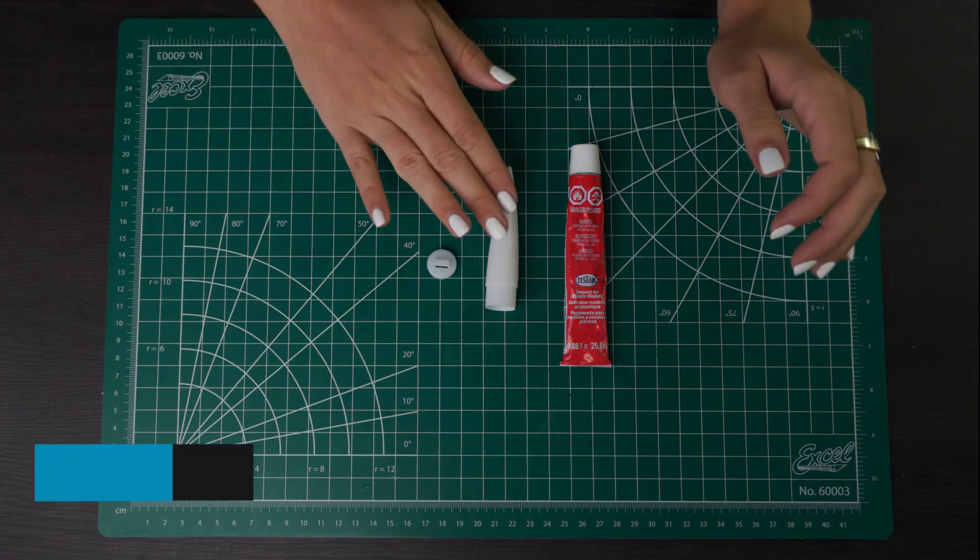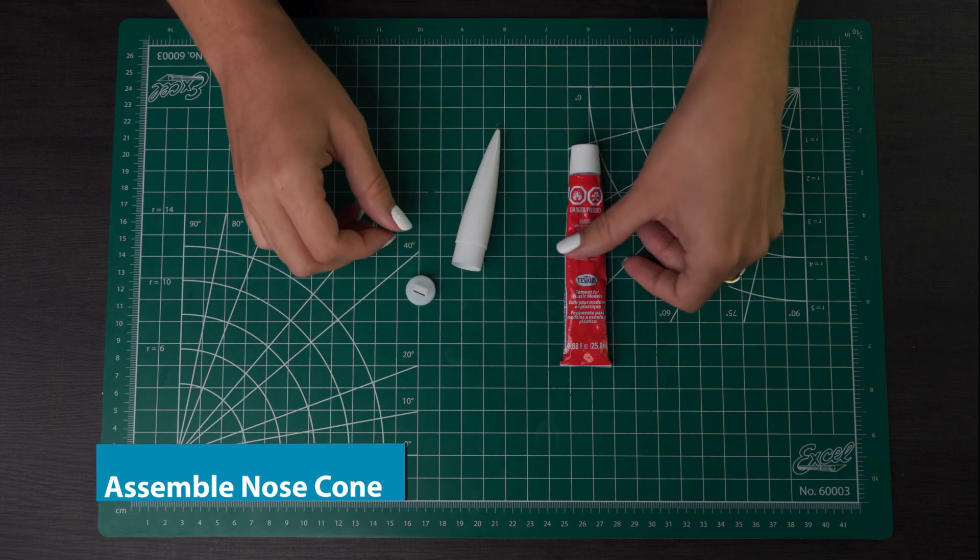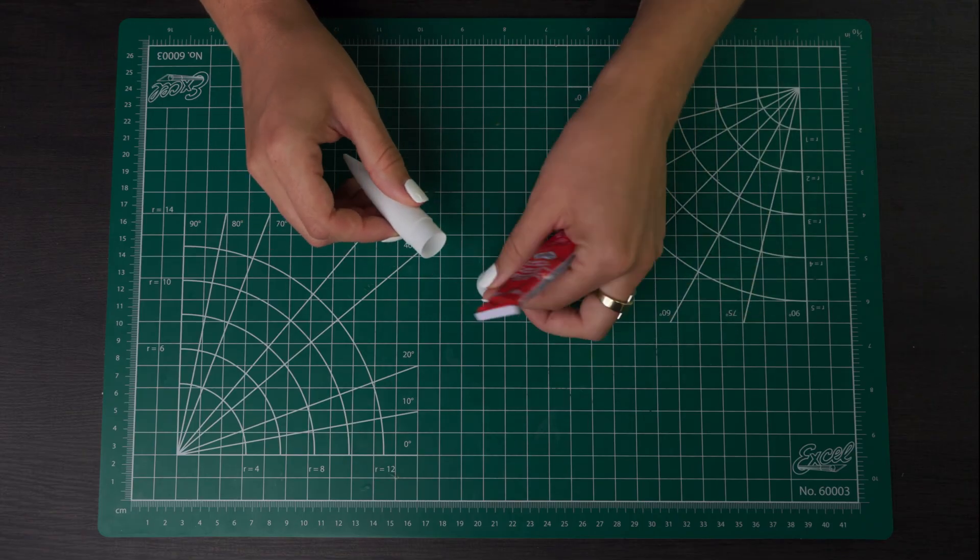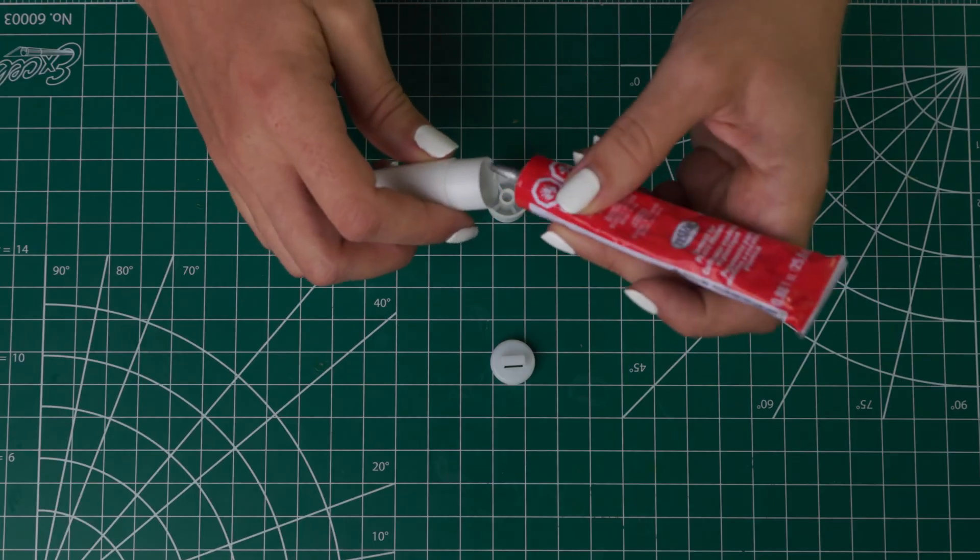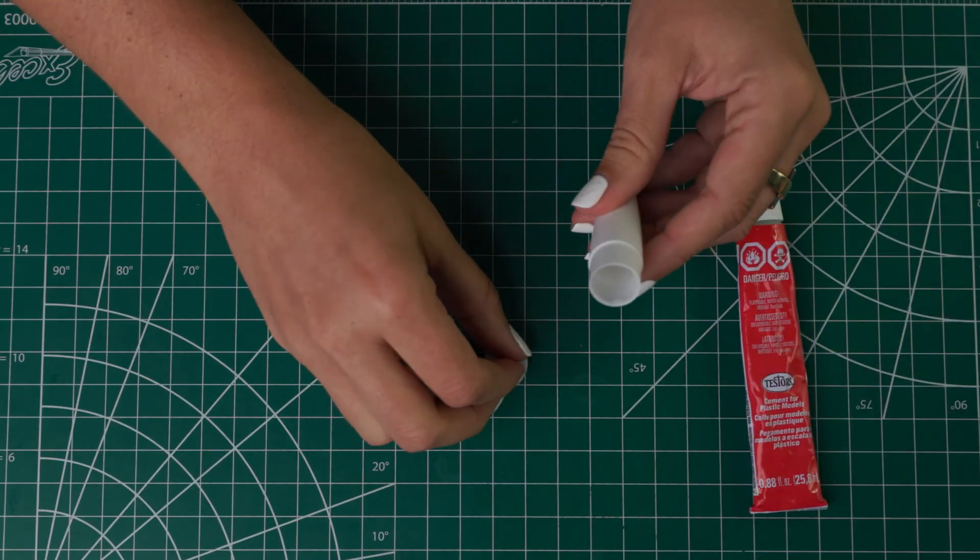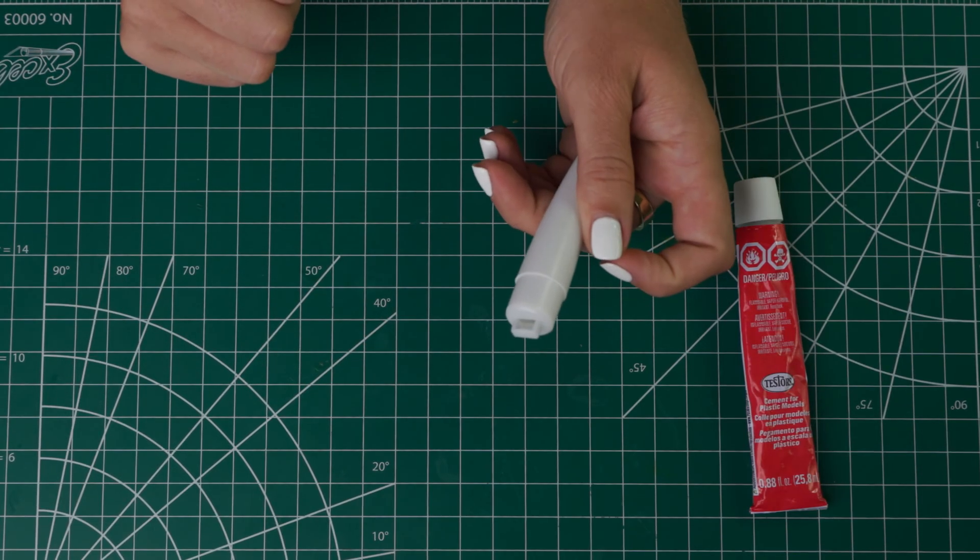For the first step we are going to assemble the nose cone so you just need these two small pieces and then your plastic cement. You're going to put plastic cement on the inside of here and then just put that piece in. We use plastic cement here because we're doing two plastic pieces so that gets them to adhere better. Put that in and then just let dry.